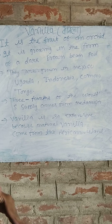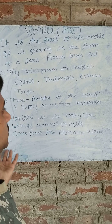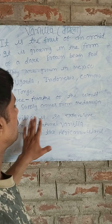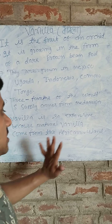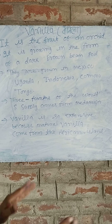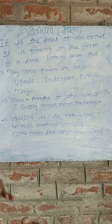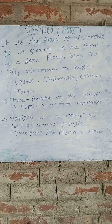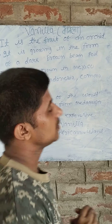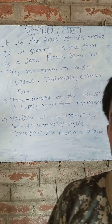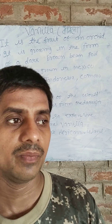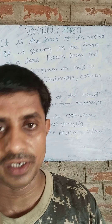The most common vanilla is the one that comes from South Africa and Southeast Africa. This way you will understand that vanilla is used as an acid-base indicator.